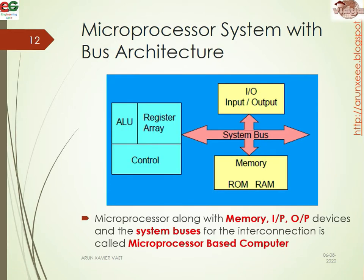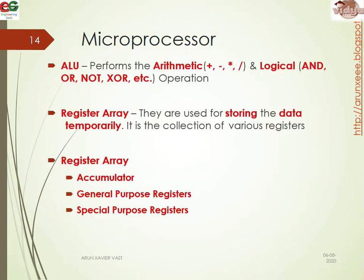The microprocessor system with bus architecture shows the microprocessor with ALU, register arrays, and controls on one side, with input and output sections connected through system buses — address bus, data bus, and control bus. The memory consists of RAM and ROM. The ALU performs arithmetical and logical operations: arithmetical means addition, subtraction, multiplication, division, etc., and logical means AND, OR, NOT, etc.